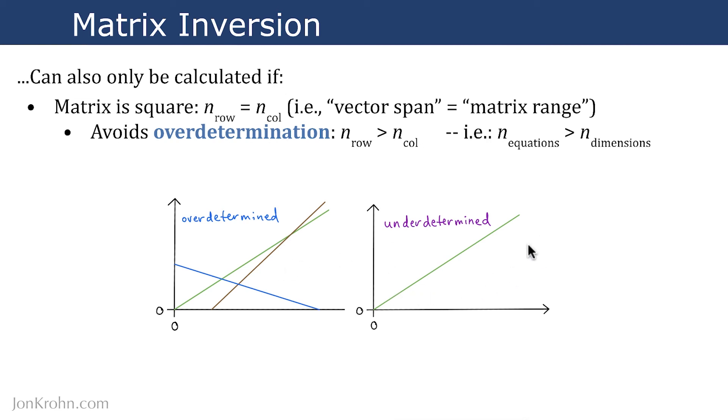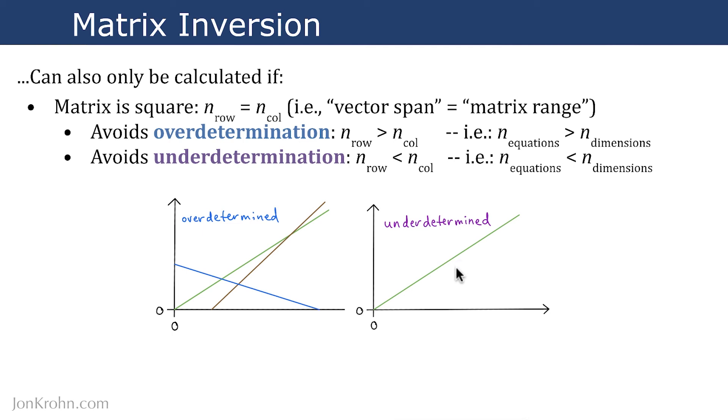Similarly, we can have an underdetermined system where the number of rows is less than the number of columns. So again, we have a two-dimensional system here. So there's two columns in the linear system, but there's only one linear equation. And of course, here we also can't calculate where lines overlap because there's only one line to work with. So those are the limitations of matrix inversion.